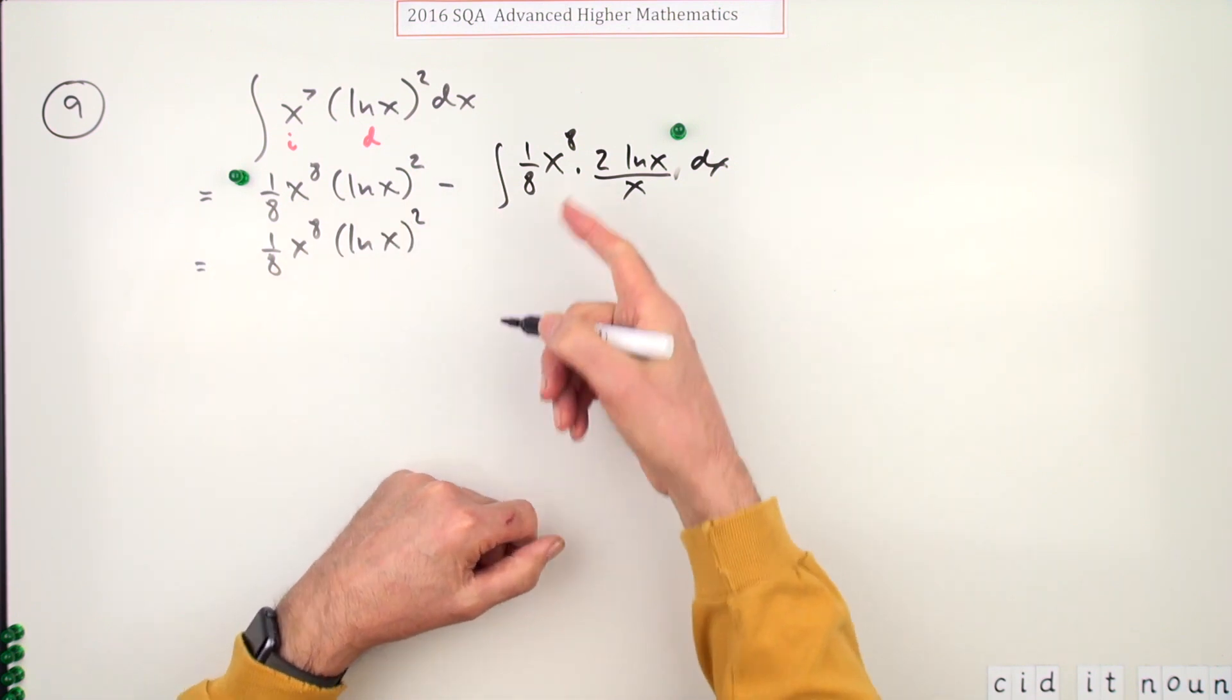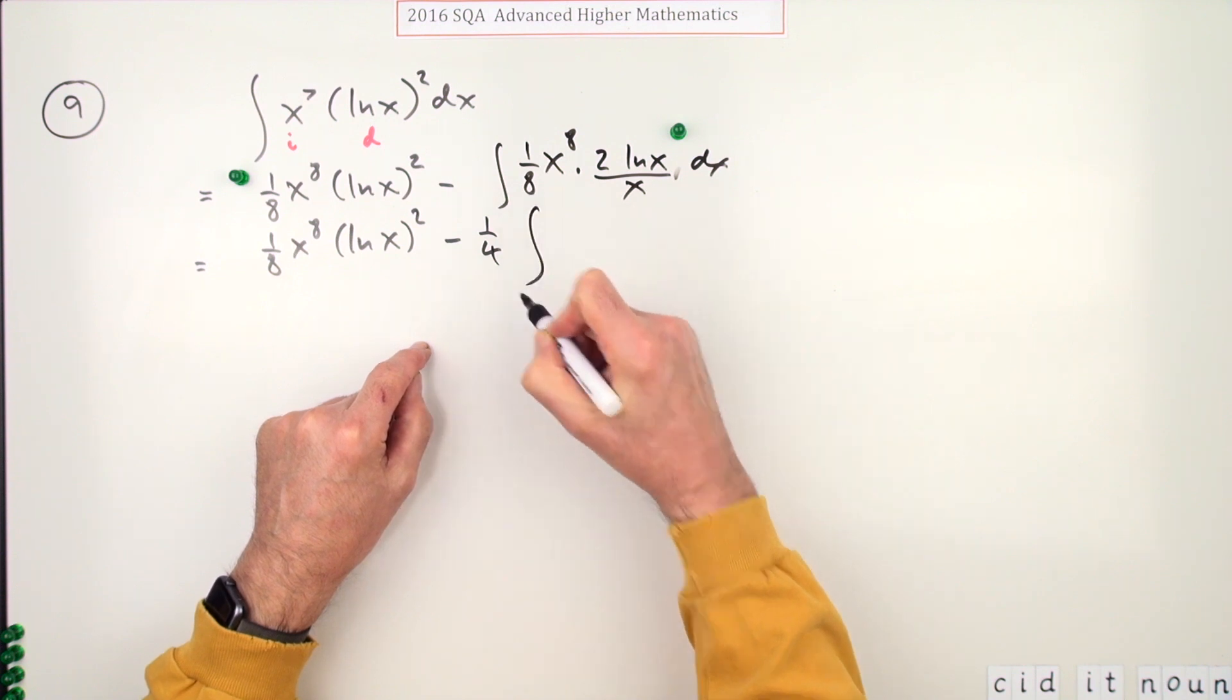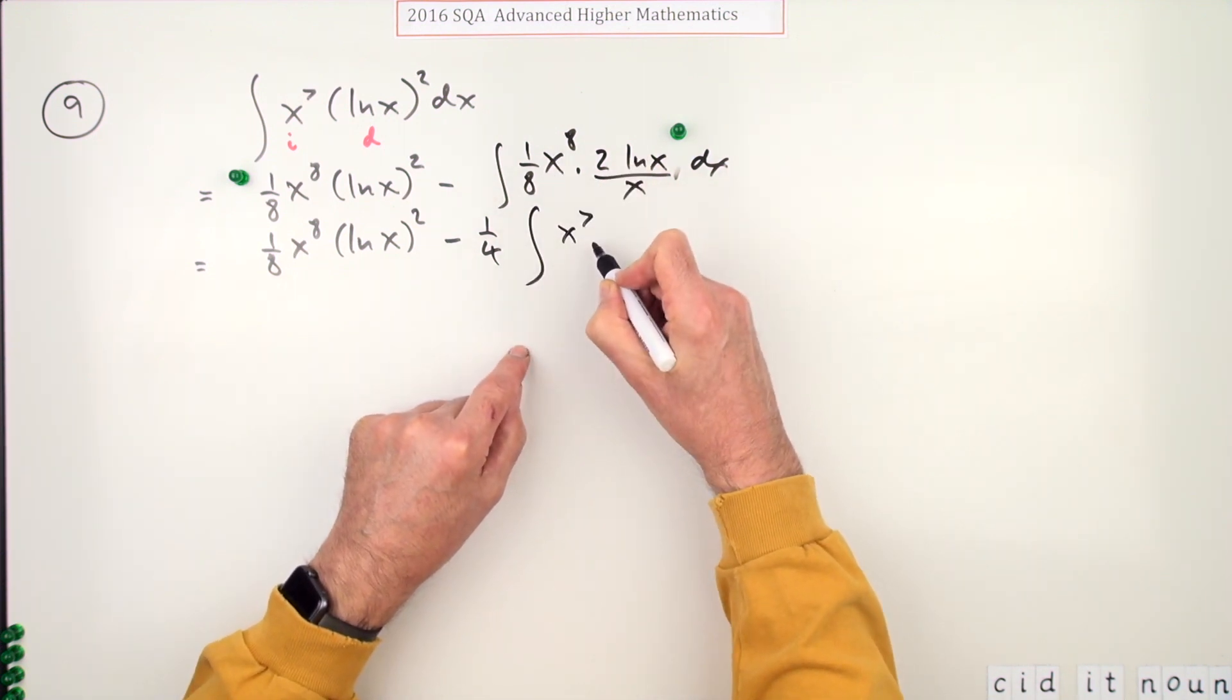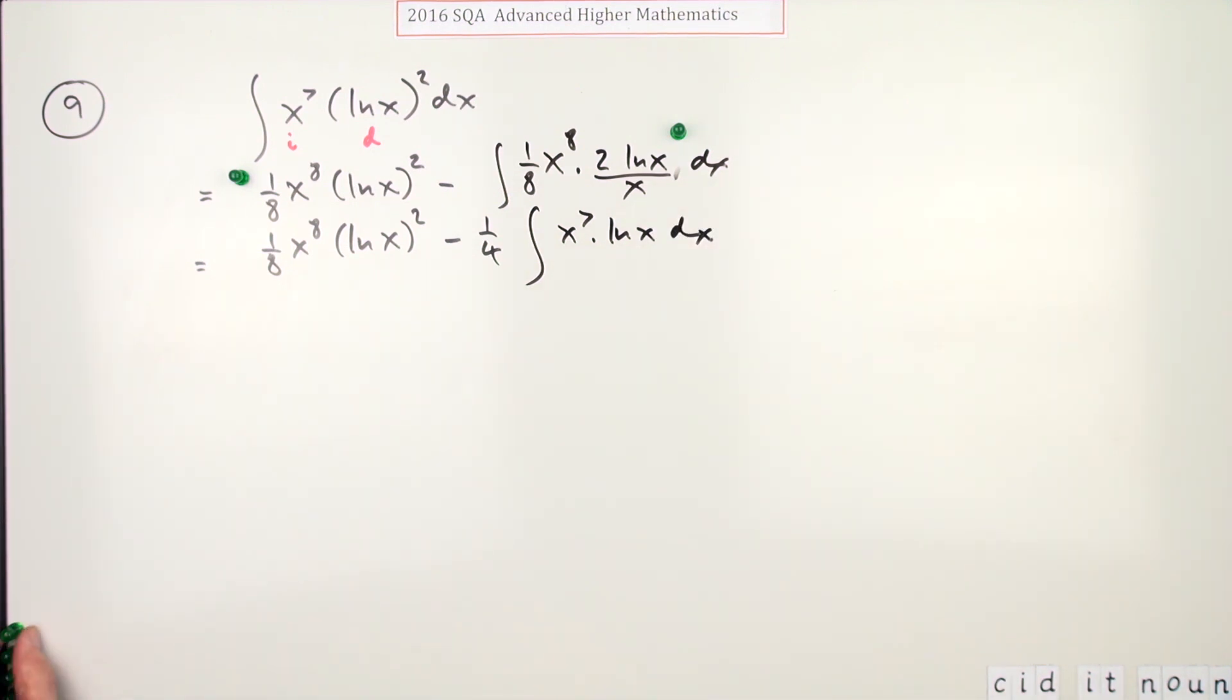So what does this come to? Take all the bits out: you've got a quarter of the integral of, and that goes down to x to the seven times ln x dx. I'd have put the third mark there once you've got it down to that.